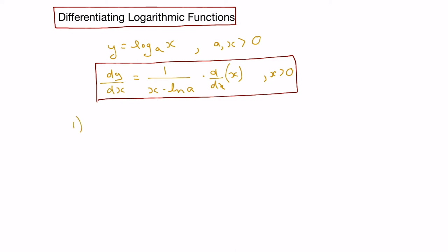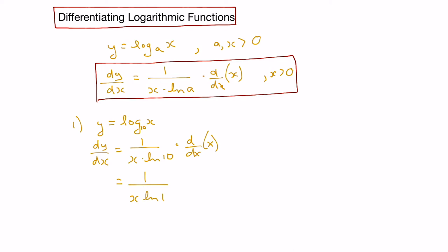Let's look at some examples. Let's say we wanted to find the derivative of log x. If the base isn't shown, it's assumed to be 10. Applying the formula, the derivative of y with respect to x is going to be 1 over x times the natural logarithm of 10, times the derivative of x. The derivative of x is just 1, so this becomes 1 over x ln 10.